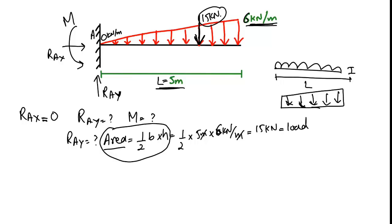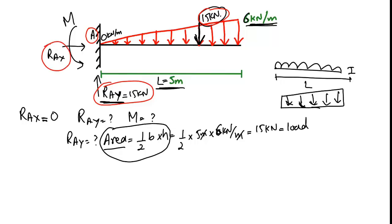Since there is only one support at A, the vertical reaction R_ay must equal 15 kN to balance the vertical load. R_x equals zero because there is no horizontal load acting on this beam.